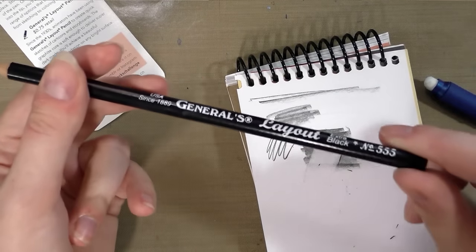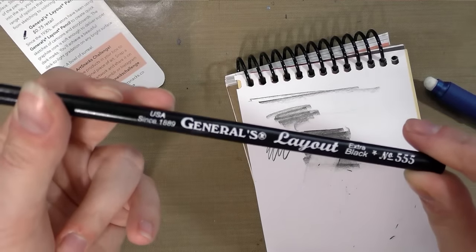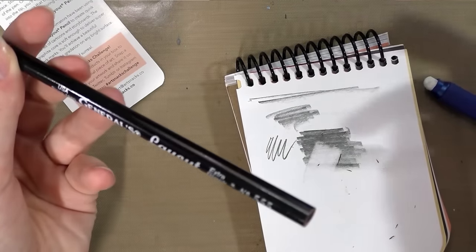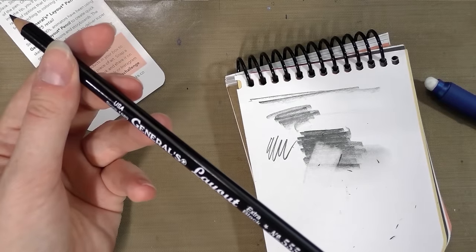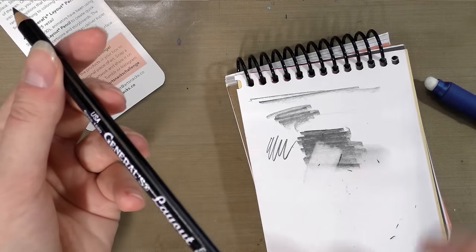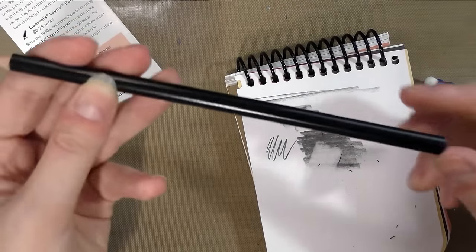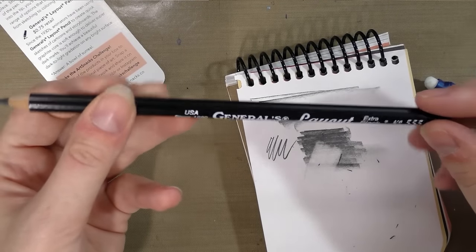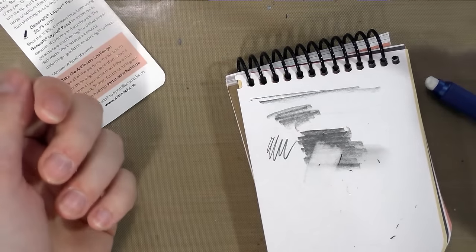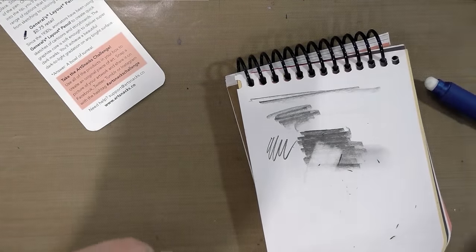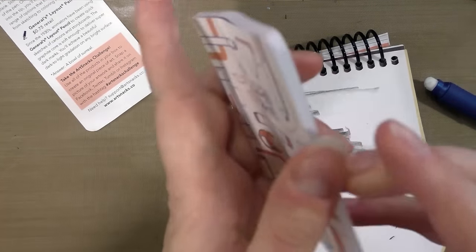It's also not as soft as I expected it to be. I use 9Bs and 8Bs for my graphite transfers. So that's the darkness, the level of softness I'm used to. This would probably be maybe a 5B or a 6B if I had to guess. So it's actually not as soft as I would normally use.